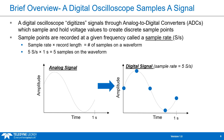Before understanding how high your sample rate needs to be, it's important to know how a digital oscilloscope samples a signal. Essentially, a digital oscilloscope has analog-to-digital converters which sample and hold voltage values from your signal and create discrete sample points from them. These sample points are recorded at a given frequency called the sample rate. So if we have a sample rate of five samples per second over one second, we can reconstruct your signal using five samples.